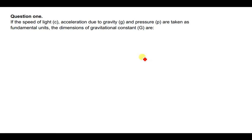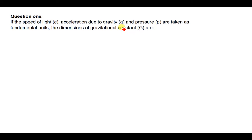So the question is: if the speed of light C, acceleration due to gravity g, and pressure P are taken as fundamental units, find the dimensions of the gravitational constant G. The first thing we need to do is know the formula for the gravitational constant.